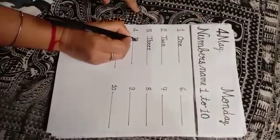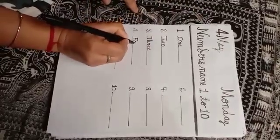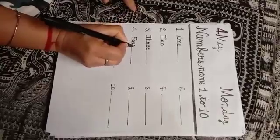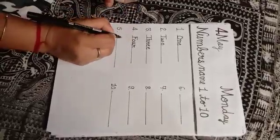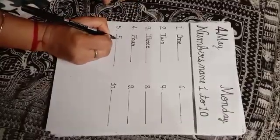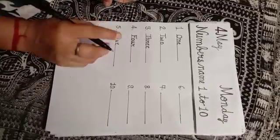Four. F, O, U, R, four. Five. F, I, V, E, five.